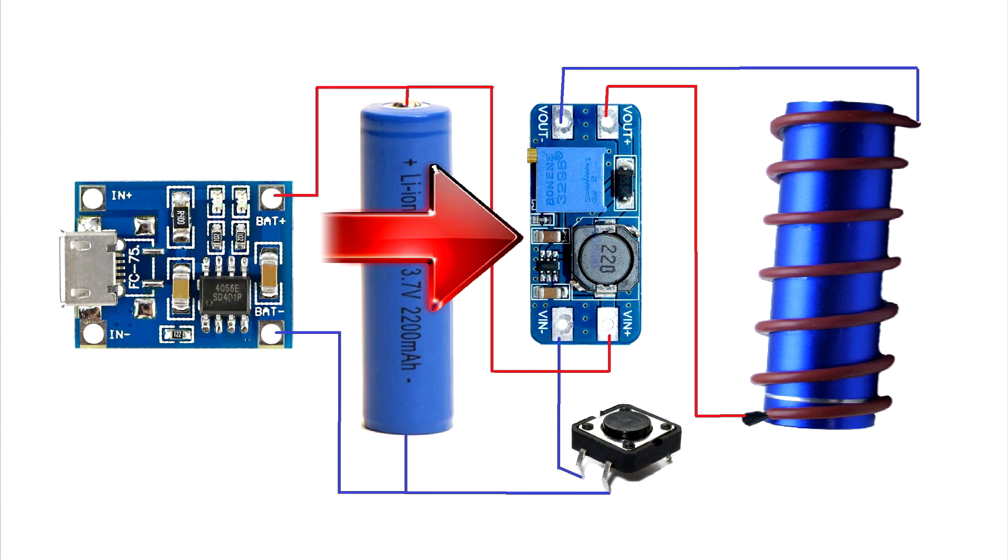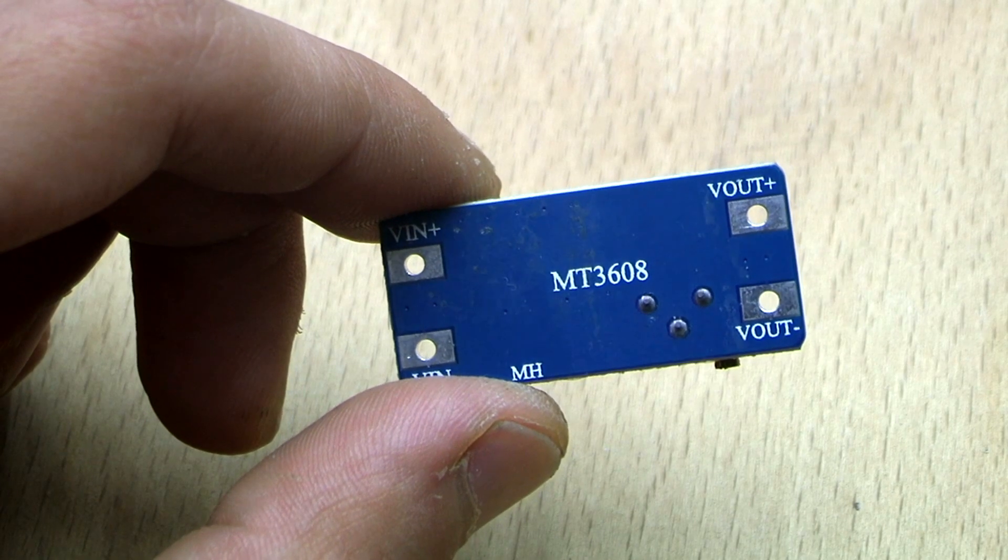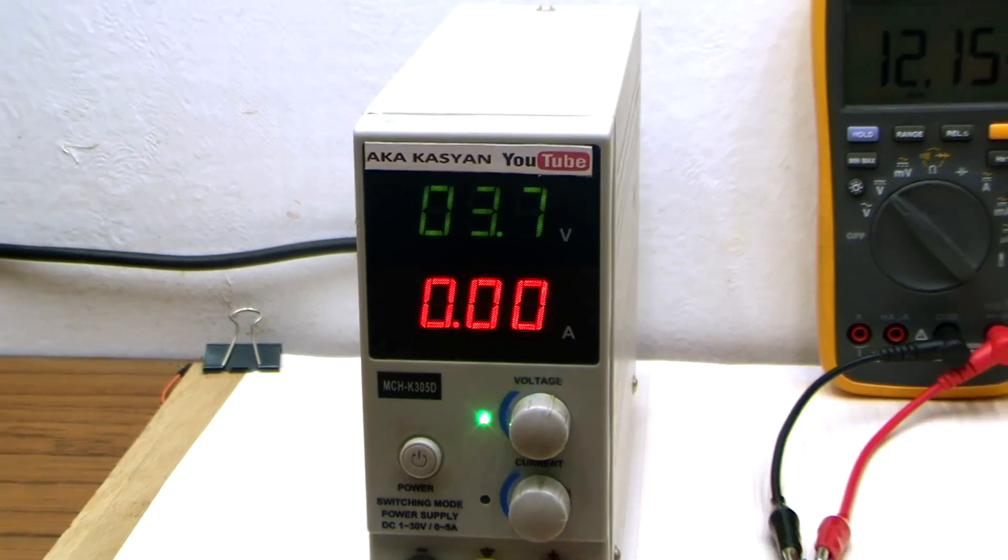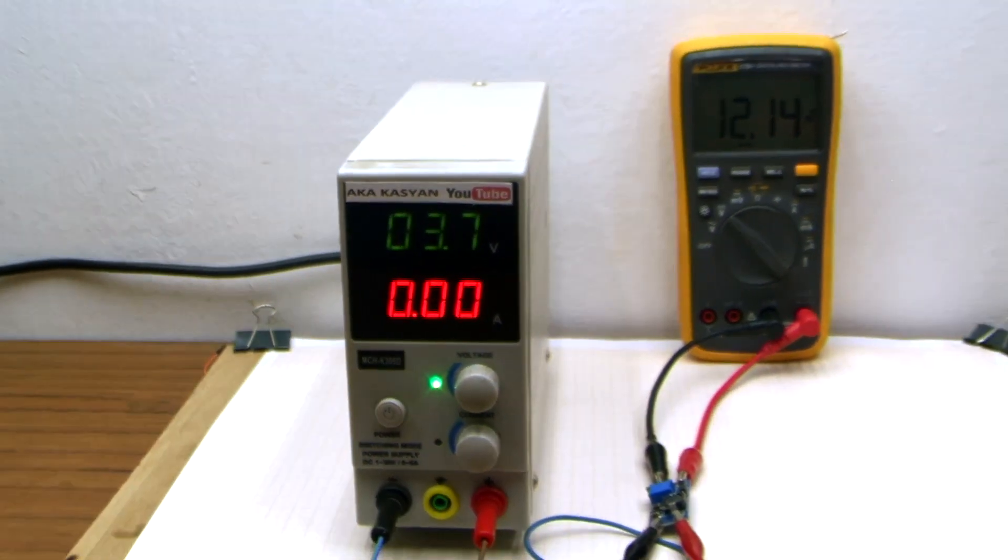As for the boost converter, a cheap module MT3608 is suitable for these purposes. We applied 3.7 volts to the input of the board and set 12 volts at the module output by rotating the tuning resistor.